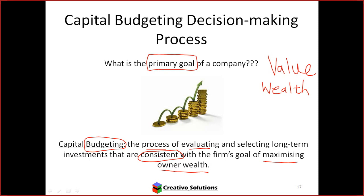We've got limited resources — being what? Cash. Rands and cents. We need to take that cash and allocate it to areas that will maximize wealth. In the gym, if you're looking at losing weight, you'd focus on cardio — running on the treadmill, cycling, and so on. If you're looking at building muscle, you'd focus on weights and exercises that build that particular area, because that's the goal you're looking at.